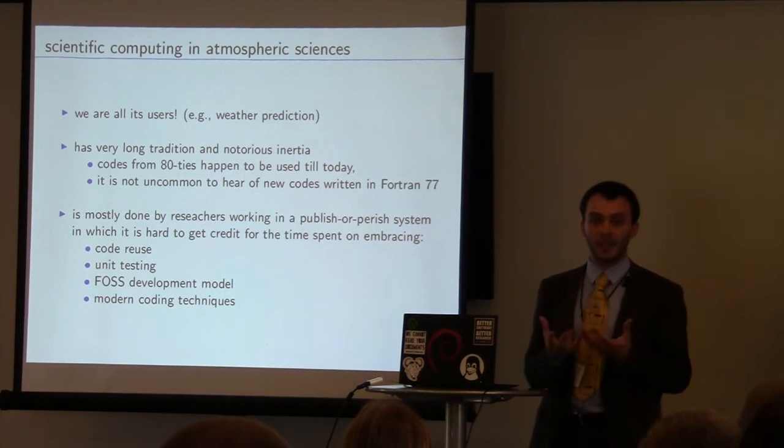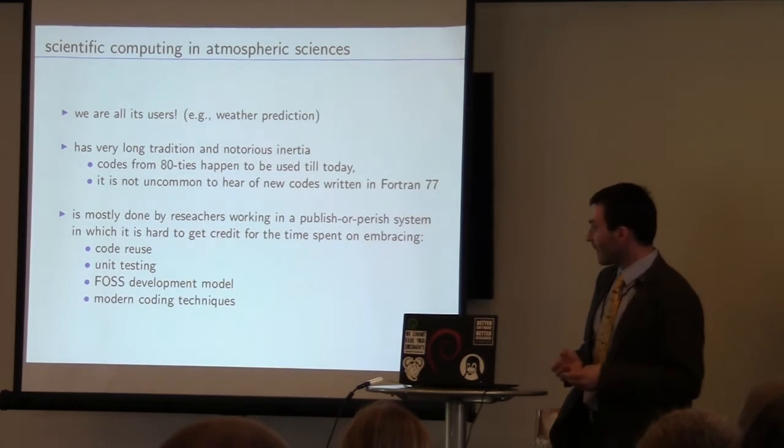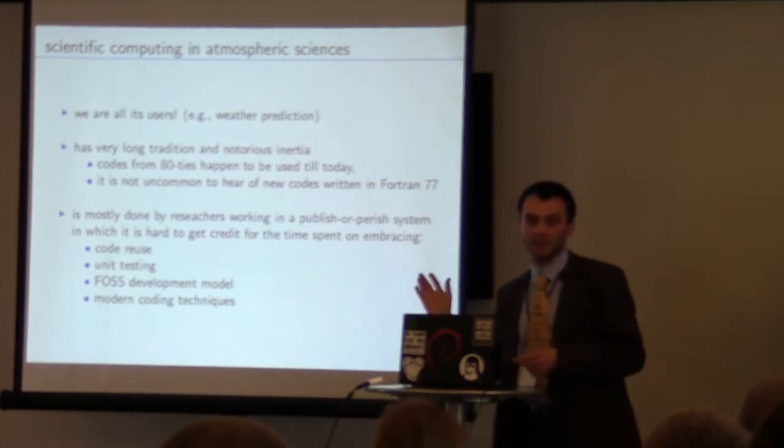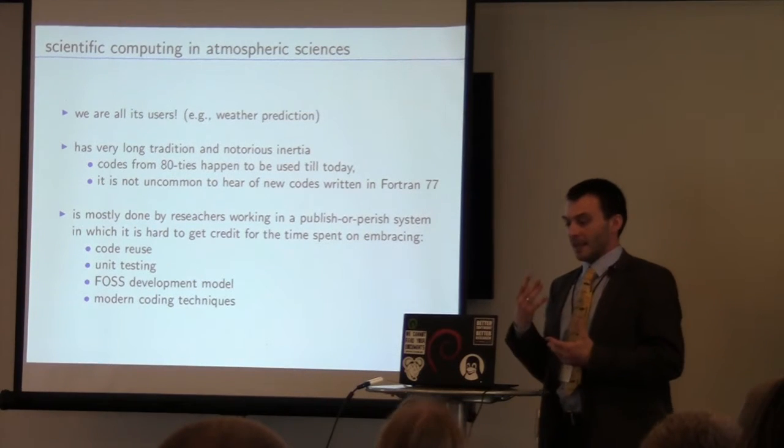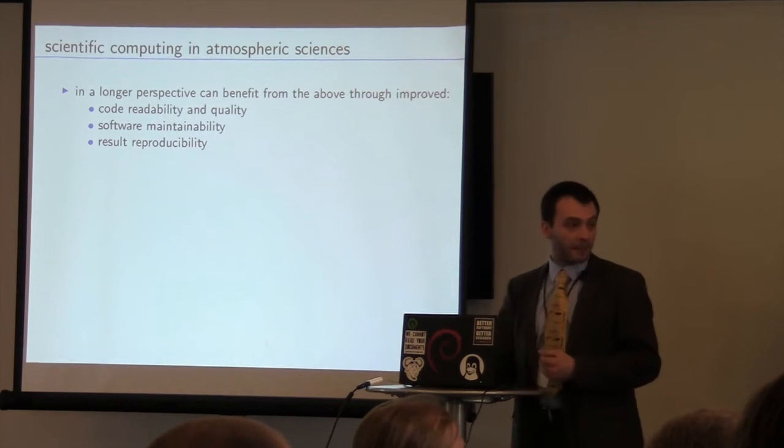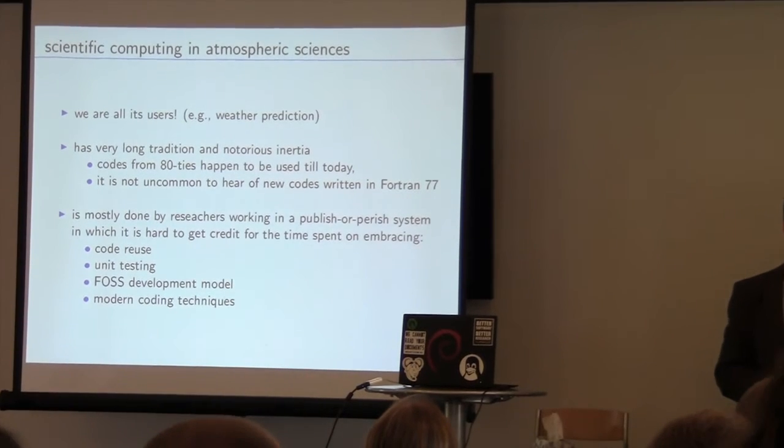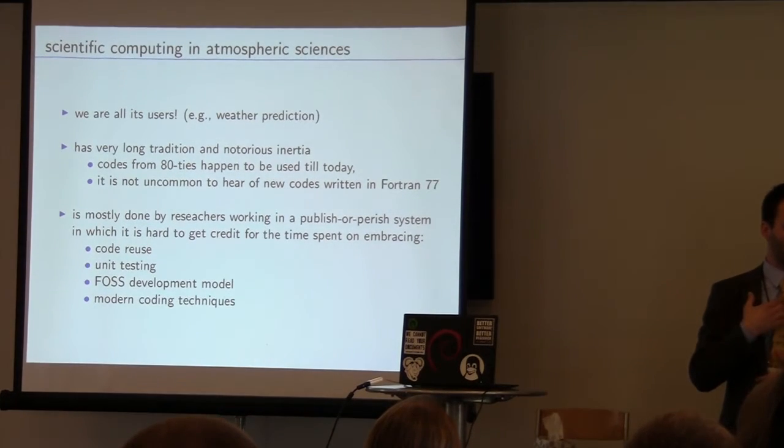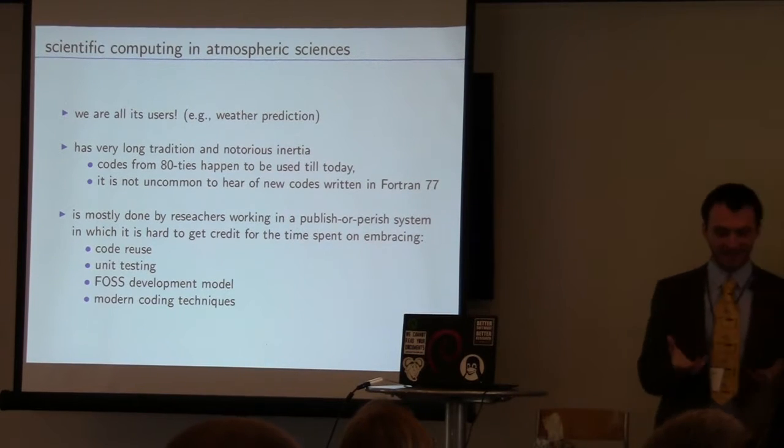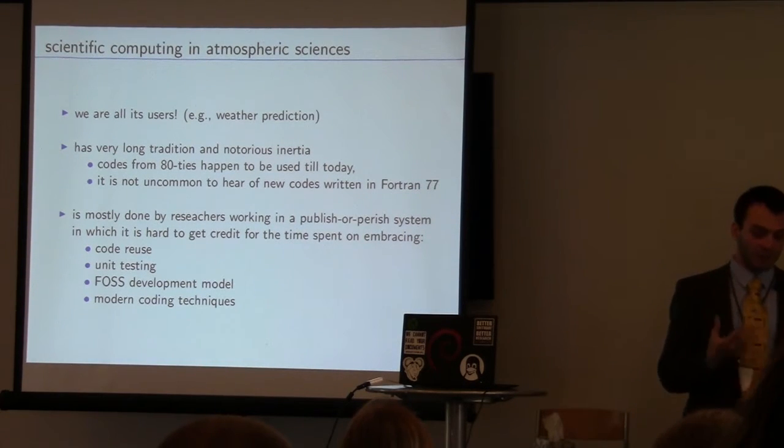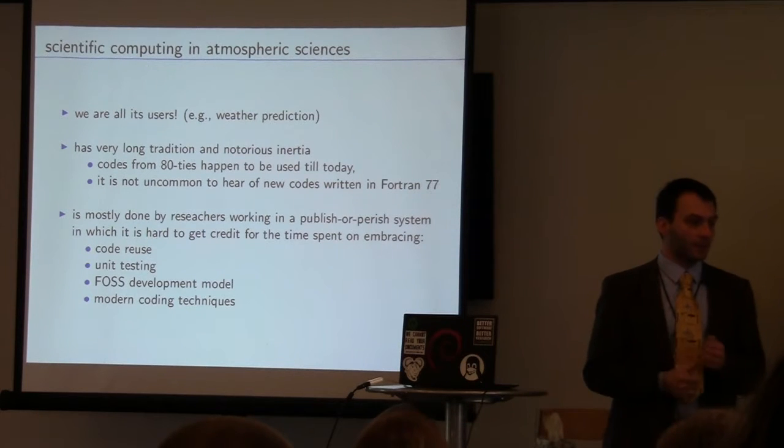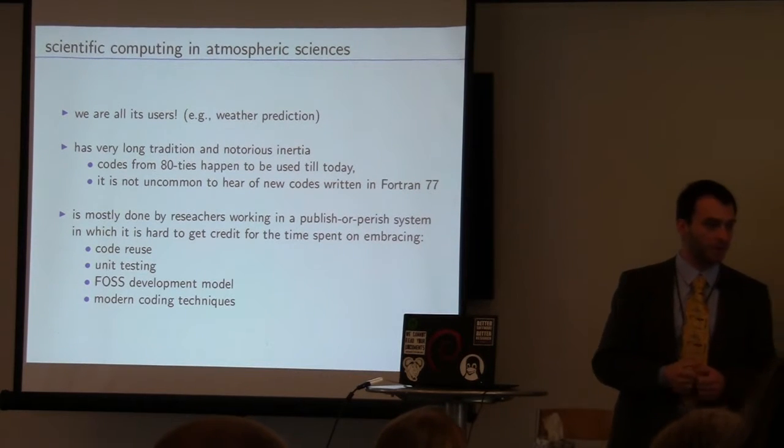And that's because one of the reasons is that the research is mostly done by people that work in a publish or perish system. We get credit for publishing. We don't get credit for other things like embracing code reuse, unit testing, open source development model, modern coding techniques. These are generally not, they are becoming, but still they are not part of the scientist's credit system. If you publish your library as part of Boost, you would get credit for it at this conference, or if I would like to find a job as a C++ programmer. But it wouldn't help me if I would like to go for a good research group in a good university. Unfortunately.